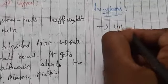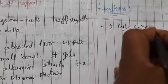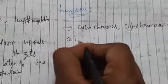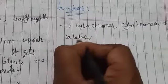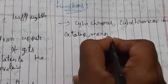Copper is important as it is a component of a large number of enzymes. Some of these enzymes include cytochrome oxidase, catalase, monoamine oxidase, uricase, and tyrosinase.